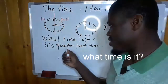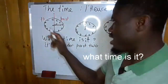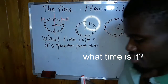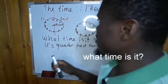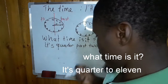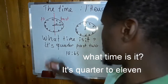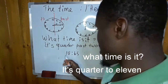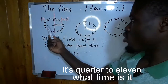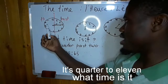If the clock shows 10:45 — what time is it? The clock is at 10:45, so you say: it's quarter to 11 — not to 12, quarter to 11. That means 15 minutes are missing until 11. It's quarter to 11. The clock shows 10:45.